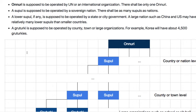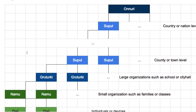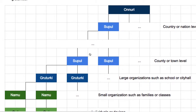There are some hierarchical structures in the Opnash platform. The lowest level contains Gazi — individuals or devices. Upper than Gazi are Namu — small organizations such as families or classes. And above Namu are Grutegi. Then Suphul, which itself has a hierarchical structure: lower Suphul and higher Suphul. And at the top is Onuri.